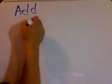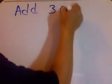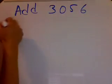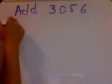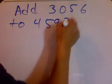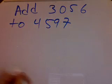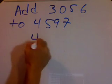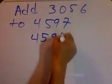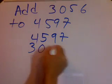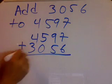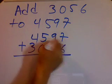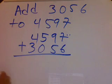Let's practice. We have the problem: add 3 0 5 6 and 2 4 5 5 9 7. It doesn't matter which number you put on top. Write one of the numbers first: 4, 5, 9, and 7, then write 3, 0, 5, and 6, and do your addition. I always put 2 there and 1 here because that way I know it's 13.